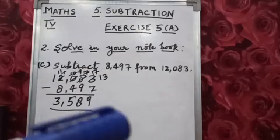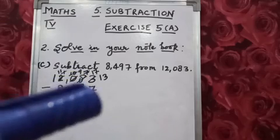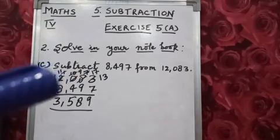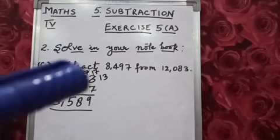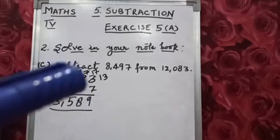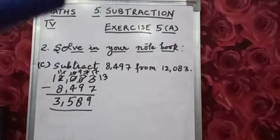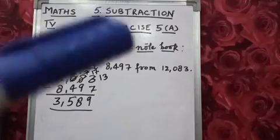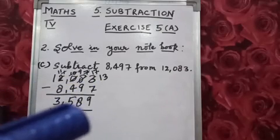So again we will take borrow. Next number is 0, so 0 will take borrow from 2. The 0 will become 10 and 8 (tens) will become 17. So 17 minus 9 is 8. After giving borrow, 10 will become 9, and 9 minus 4 is 5.